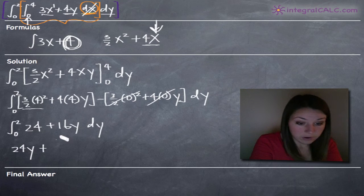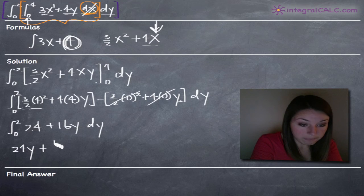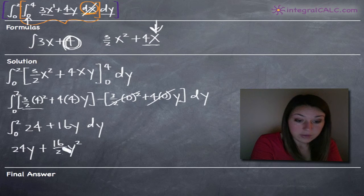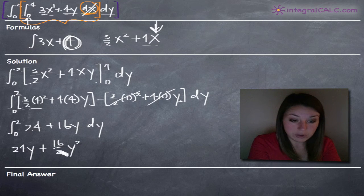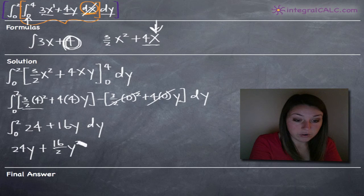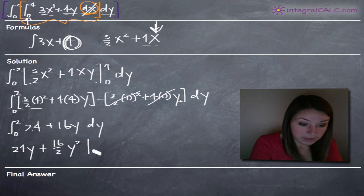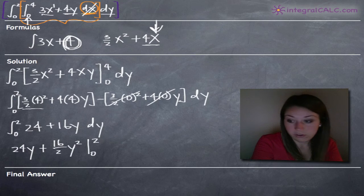And then as far as 16y, we're going to add 1 to the exponent. 1 plus 1 gives us 2. We divide the coefficient 16 by the new exponent 2 and our integral is 16 halves y squared. And we're going to be evaluating that on the range 0 to 2.